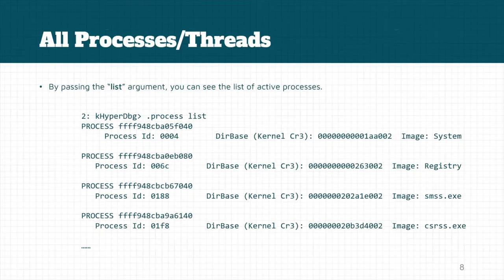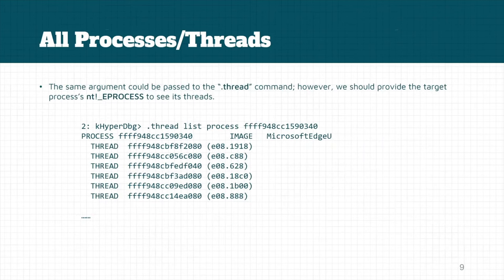Before using this command you should make sure that your symbol server is set. It shows both the kernel CR3 register aligned with image name, process ID, and the structure of the EPROCESS. If you want to see just the threads for a specific process, you can use .thread list.